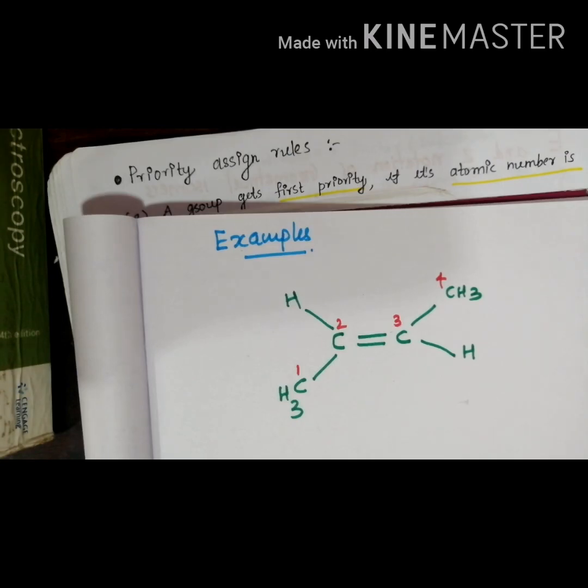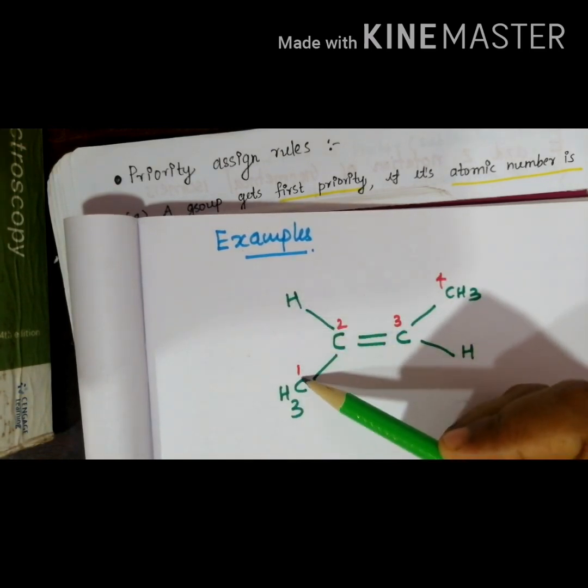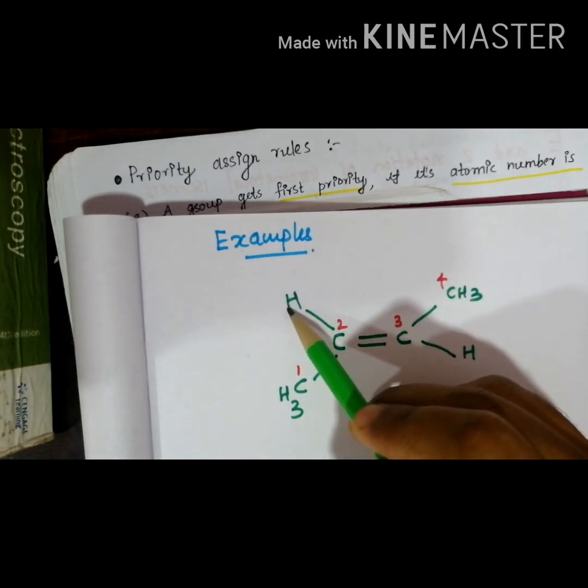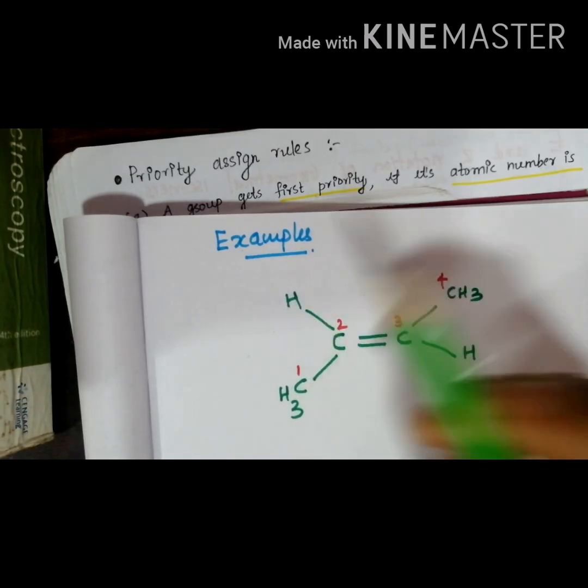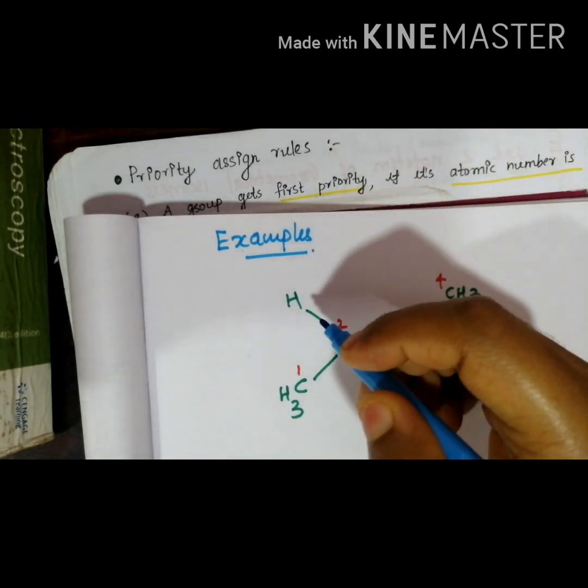According to our CIP rules, rule number one is assign priority number on the basis of atomic number present in each group. So I can select first carbon, so I can look at both of these groups for the atom. On the basis of atomic number we can say that hydrogen is lowest atomic number compared to C.